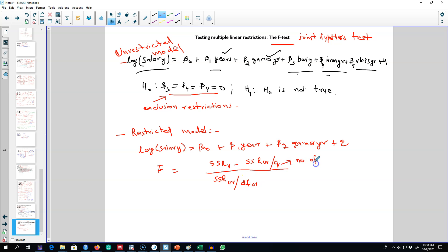This is the number of restrictions. We use F distribution and reject H0 if F is greater than the critical value. If this hypothesis is rejected, then we are going to conclude that at least one of these variables has some impact on salaries.